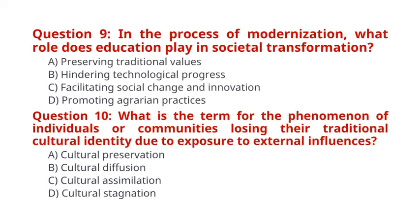Question 9. In the process of modernization, what role does education play in societal transformation? A. Preserving traditional values. B. Hindering technological progress. C. Facilitating social change and innovation. D. Promoting agrarian practices. The correct answer for question 9 is option C: Facilitating social change and innovation.